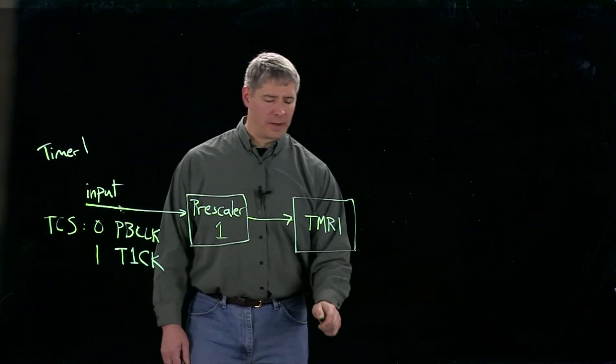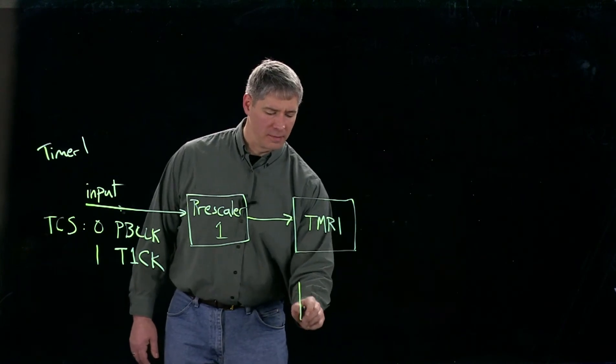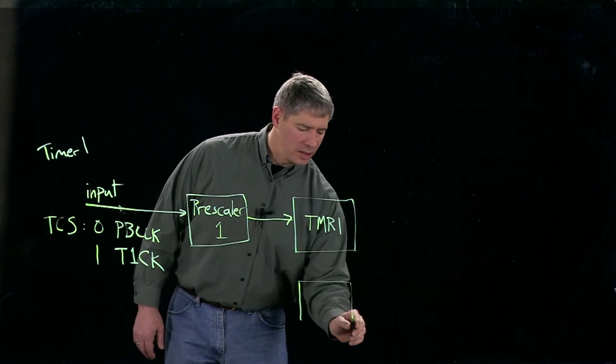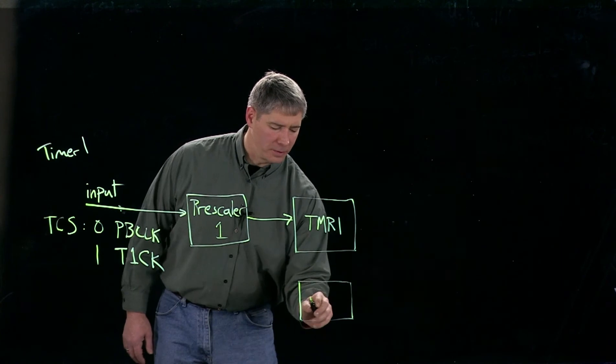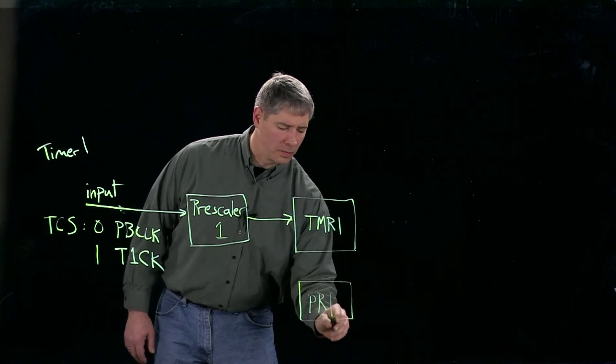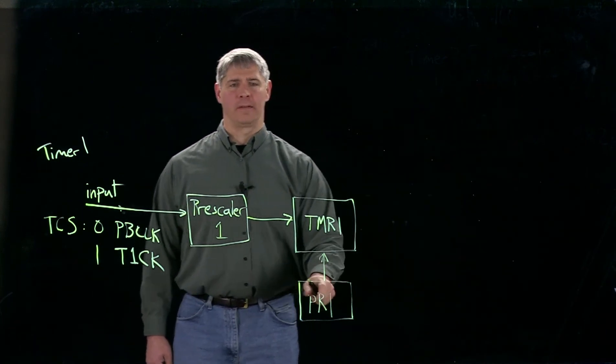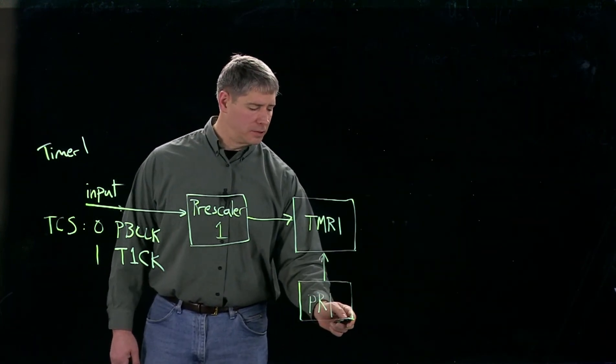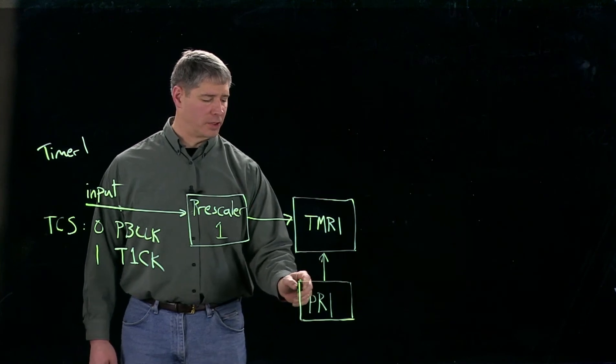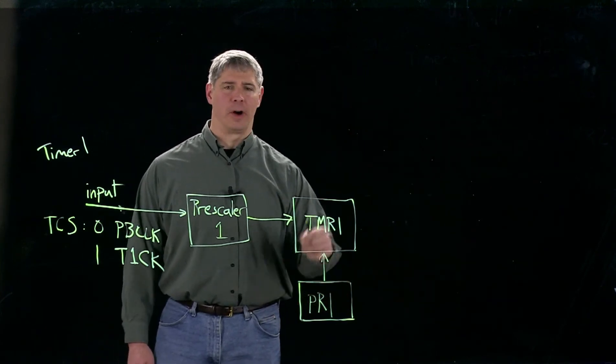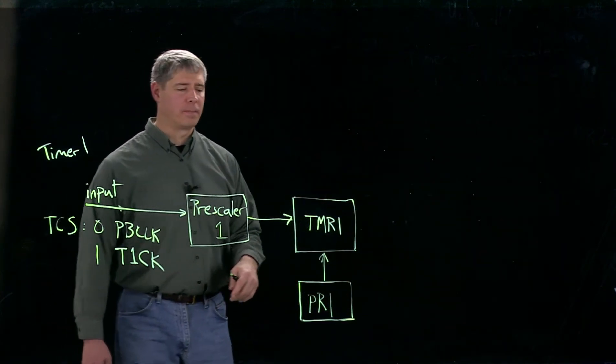And remember we have a period register where we can set the value at which timer one rolls over, period register one. And if we don't set any value in there, it's going to default to 2 to the 16 minus 1, so it's going to let the counter count up all the way before rolling over.